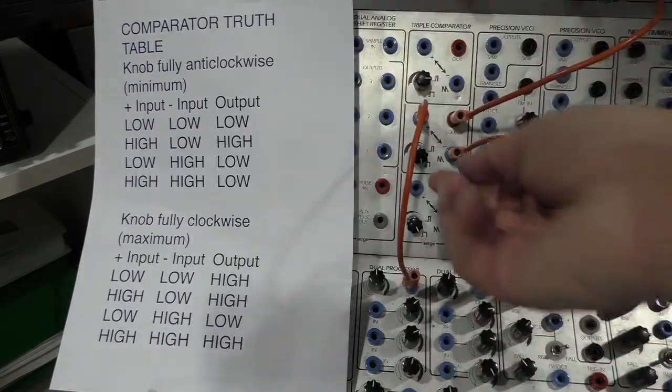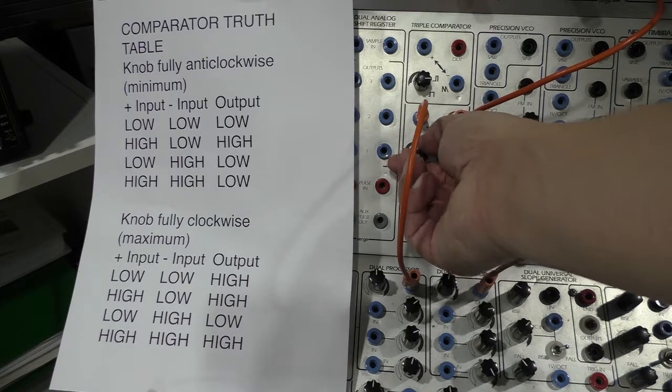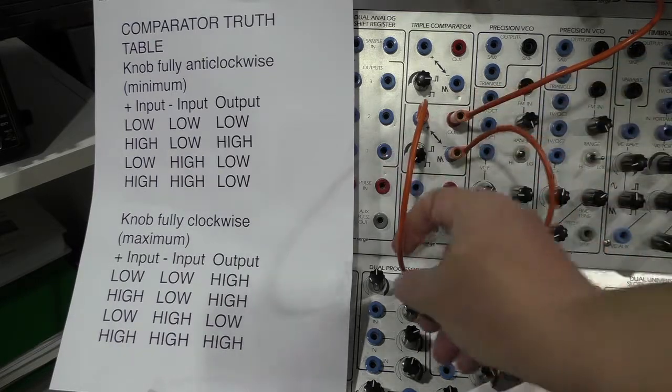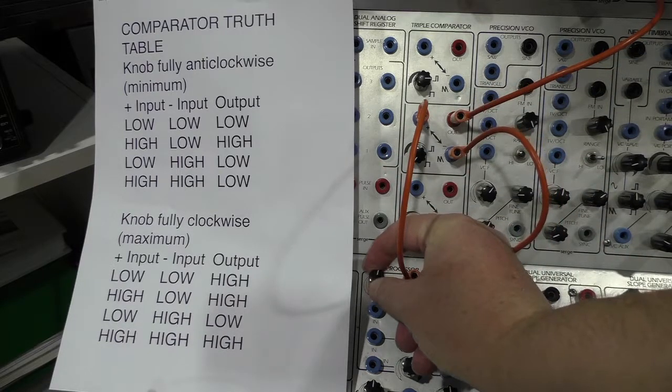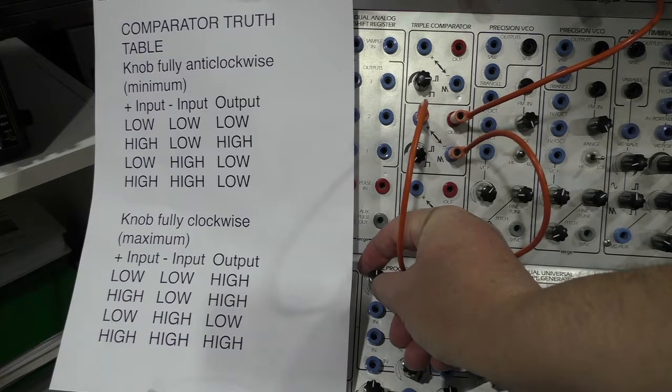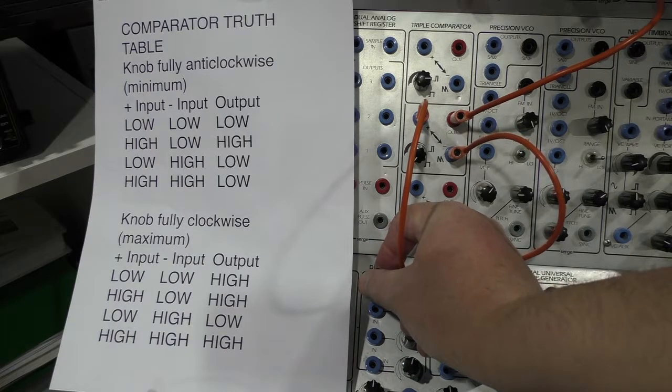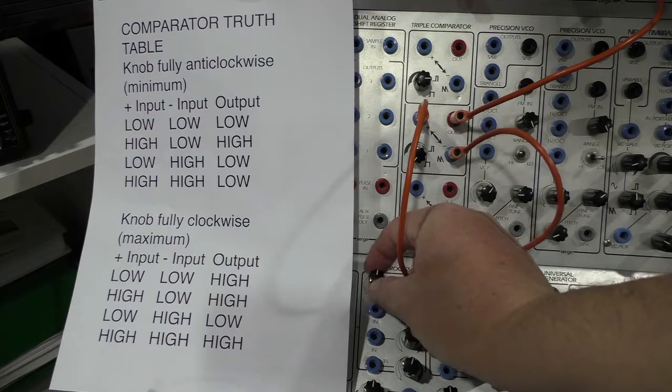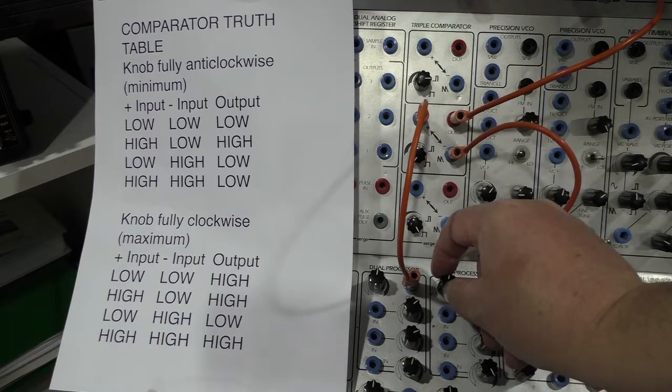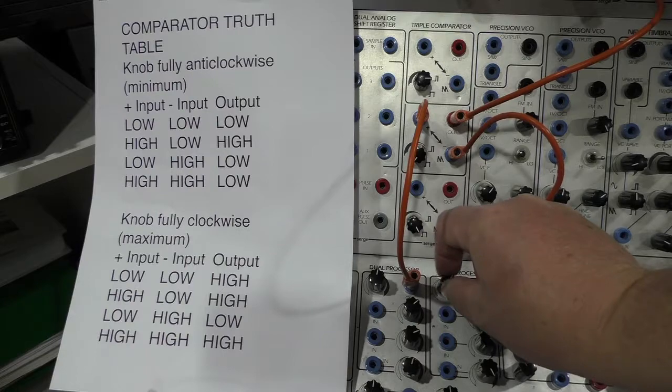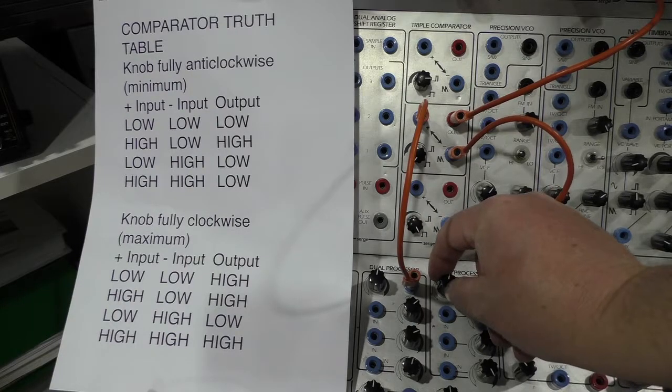So with the knob of the comparator turned fully anti-clockwise, a high value, a high voltage on the plus side will cause the output to go high. But a high voltage on the negative side won't have the same effect.